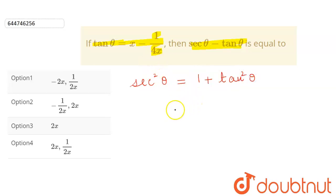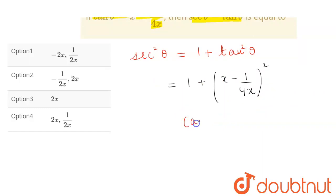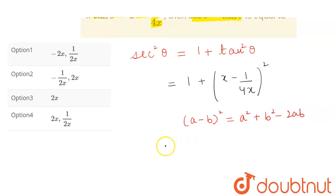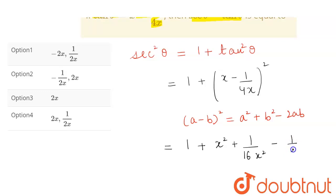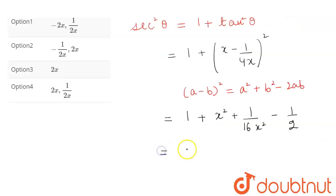We know the value of tan, so this will be equal to 1 plus (x minus 1) upon 4x, whole square. Now we know the formula for (a minus b) whole square which is equal to a² plus b² minus 2ab. Applying this, we get 1 plus x² plus 1 upon 16x² minus 1 upon 2.